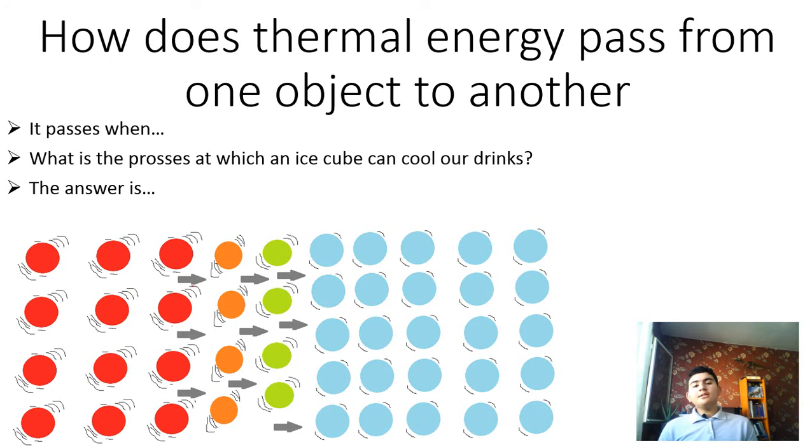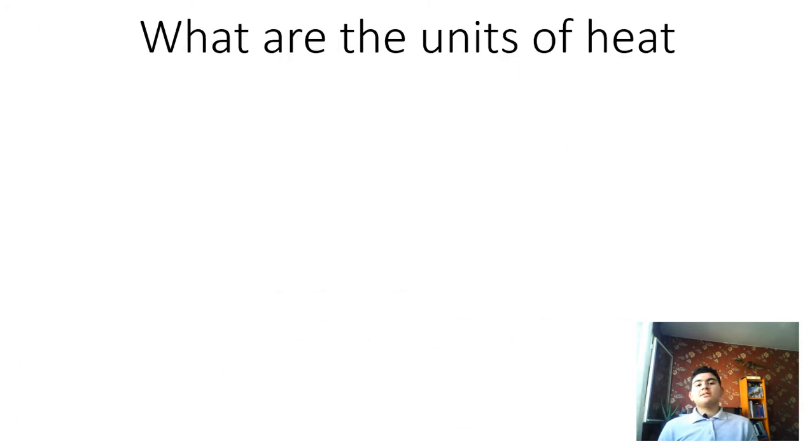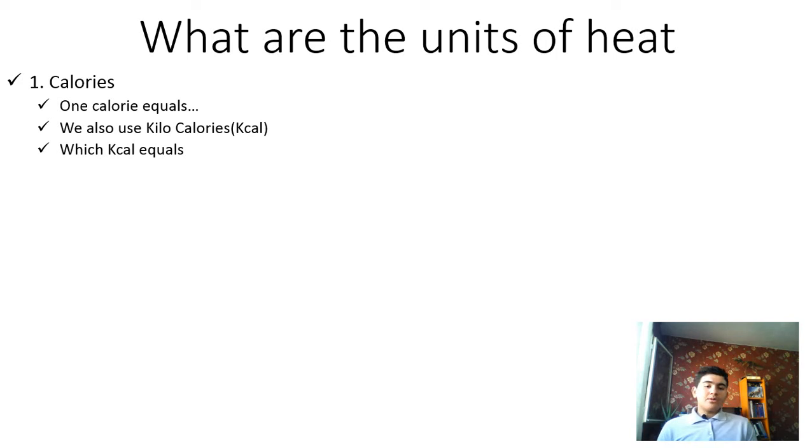A convenient unit of heat energy that is mostly used in most textbooks is called calories. One calorie is the amount of heat energy needed to raise the temperature of one gram of water by one degree Celsius. Conversely, a calorie is also the amount of heat energy that one gram of water releases when it is cooled by one degree Celsius.